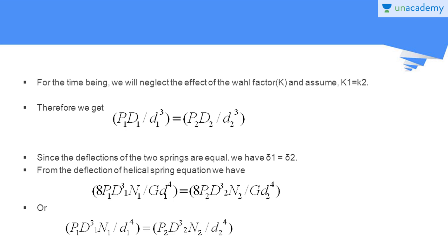Since the deflections of the two springs are equal when the concentric spring is under the application of an axial force, we have δ₁ equals δ₂. Using the formula for deflection in helical springs: δ₁ = 8P₁D₁³n₁ / (G d₁⁴) and δ₂ = 8P₂D₂³n₂ / (G d₂⁴). These deflections for the two springs are set equal.